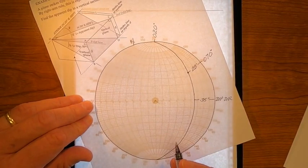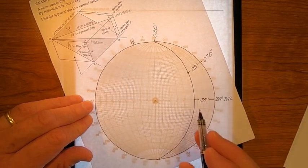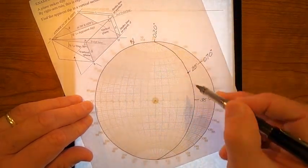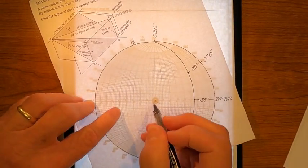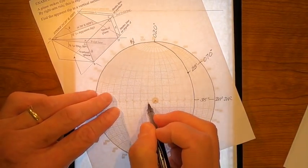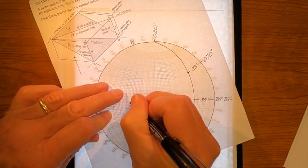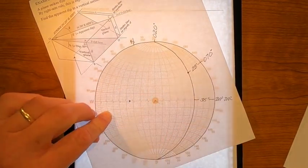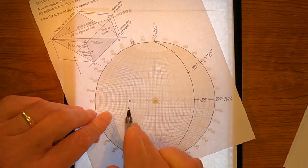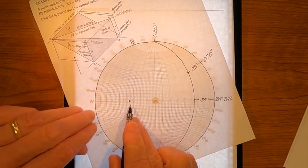The simplest way to plot the pole to this plane, having a 35 degree dip in that direction, is to simply count from the center outward. 10, 20, 35 degrees. That is the pole to that plane.